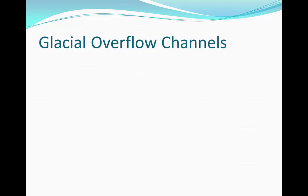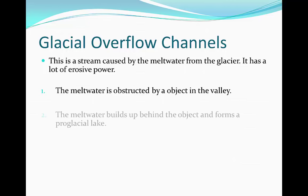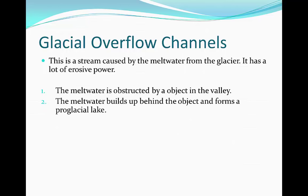Glacial overflow channels are streams caused by meltwater from the glacier, and they have a lot of erosive power. The process begins when the meltwater is obstructed by an object in the valley. The meltwater then builds up behind this object and forms a proglacial lake. This meltwater stream is still trying to move forward and get across the object, but it is being blocked.